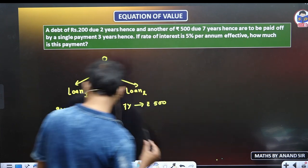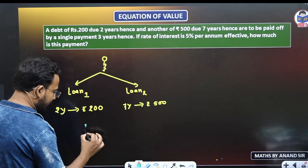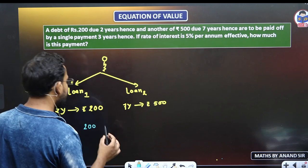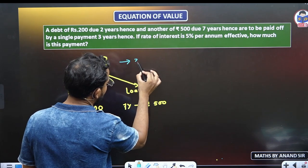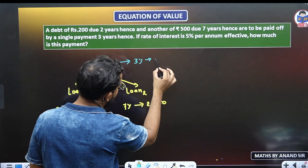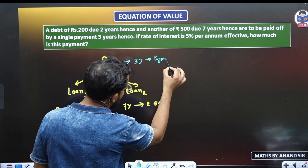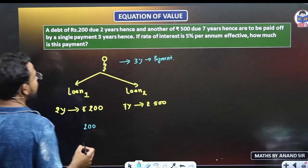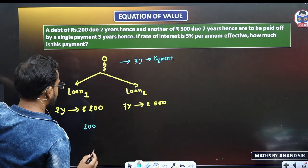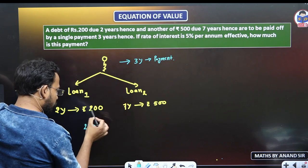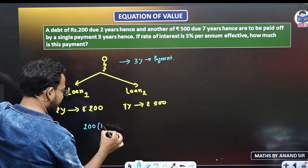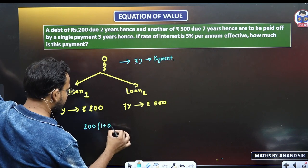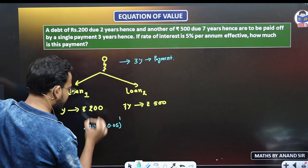Let's see what we need to do. First of all, these 200 rupees — what is my rate of interest? 5%. So after 3 years I am doing payment. After 2 years I had to pay 200 rupees, so I had to carry it for 1 extra year. The rate of interest is 5%, that is 0.05.